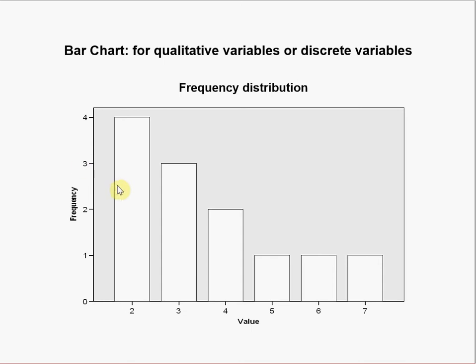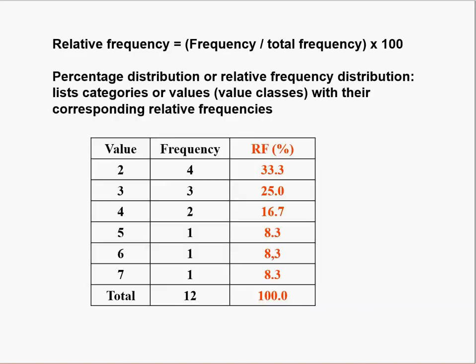One thing you need to know is that for a bar chart for qualitative variables or discrete variables, there should be spaces between the bars — they should not be adjacent to each other. Pay close attention to this.